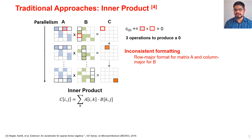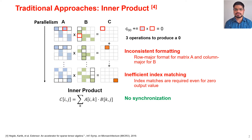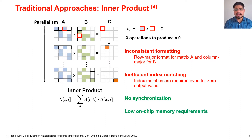The inner product approach has a few major advantages and disadvantages. First, it has inconsistent formatting because matrix A is stored in row-major order and matrix B is stored in column-major order. Then there is inefficient index matching as we already saw. However, it does not require any synchronization because different output elements can be produced in parallel, and it has low on-chip memory requirements since it only requires storing a row of A and a column of B in on-chip memory.